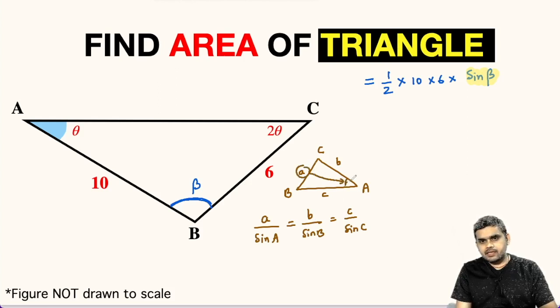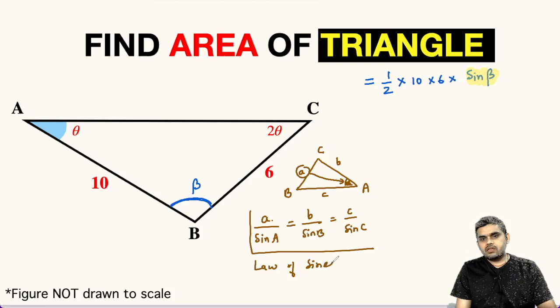If a is selected, then the opposite angle is capital A. So a upon sine A equals b upon sine B equals c upon sine C. This is called law of sines.